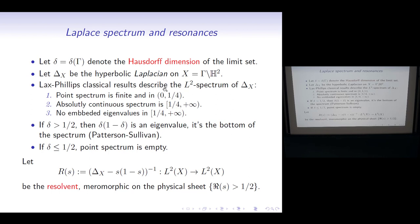Delta is going to refer to the Hausdorff dimension of the limit set, which is also the critical exponent of the Poincaré series of the group. Now you take the hyperbolic Laplacian on this surface. The L² spectrum of this operator is well-known — these are classical results by Lax and Phillips. You may have some isolated eigenvalues; the point spectrum is finite and below one quarter. There is nothing at zero of course, because we are in infinite volume — the constant function is not an L² eigenfunction. Above one quarter, you have the continuous spectrum, and there are no embedded eigenvalues inside this half-line.